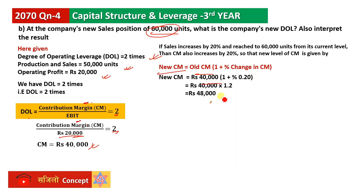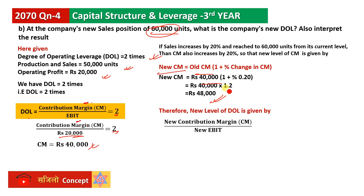New EBIT is 28,000. The new contribution margin after sales increase to 60,000 units is 48,000. Therefore, the new degree of operating leverage equals new contribution margin divided by new EBIT, which is 48,000 divided by 28,000, approximately 1.7 times.